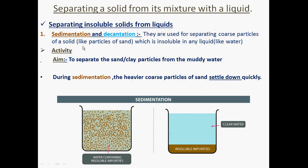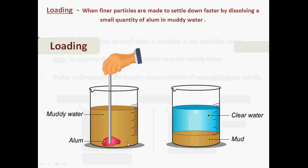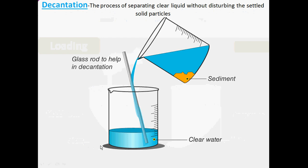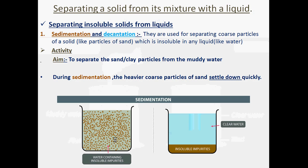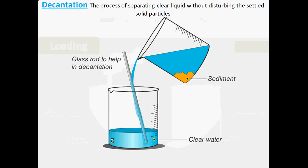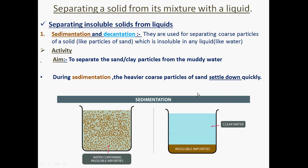These were the techniques explained — sedimentation, decantation, and filtration. Watch attentively, make appropriate notes, and you can also perform these processes practically at home. Use some muddy water and after some time you will see the particles settle at the bottom. You can also observe at home that before cooking, your mother cleans rice with water — the top layer containing dust particles is the supernatant layer, which is poured off, leaving clean rice behind. Similarly, pulses are also cleaned this way.